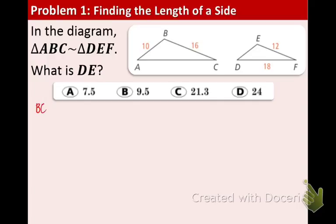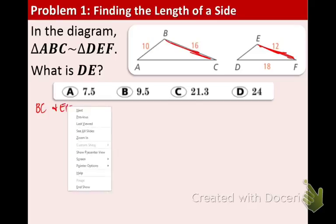So let's just name them right now, BC, right here, and EF. As you can see, they're in the same position. They are corresponding and the other pair of corresponding sides are AB and DE.